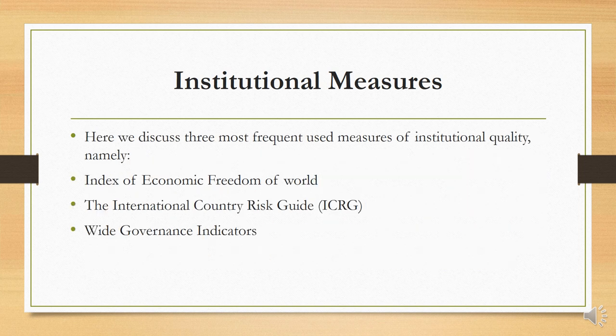Here we discuss the three most frequently used measures of institutional quality: namely, the Index of Economic Freedom of the World, the International Country Risk Guide (ICRG), and the Worldwide Governance Indicator (WGI).